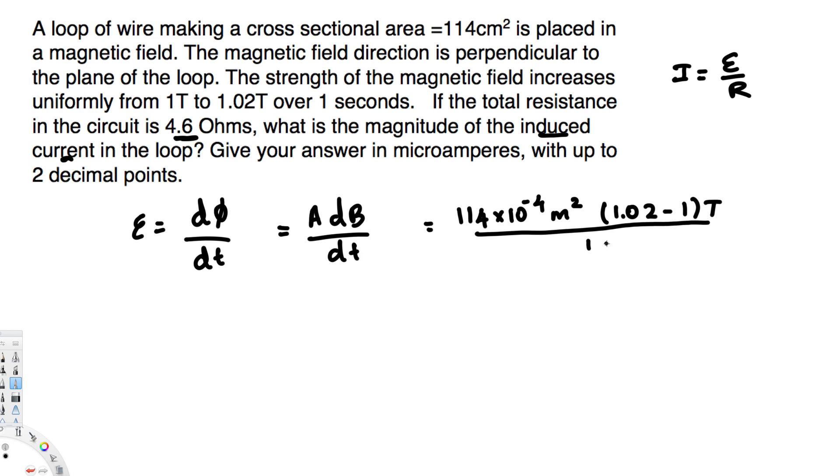Now let's calculate this value. Instead of 114 we can replace this one with 0.0114 and this is going to be 0.02. If you multiply these two together you will get 0.000228 and this can be written as 2.28 times 10 to the power of minus 4, and this is voltage. EMF is in voltage.